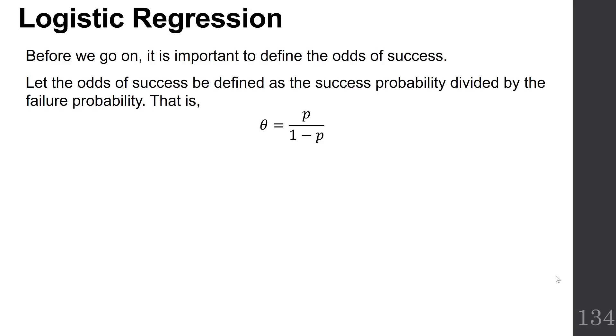So the odds are the probability of success over the probability of failure. If the probability of success is p, then the probability of failure is 1 minus p. Notice that the odds can go from 0 to infinity, while probabilities only go from 0 to 1.